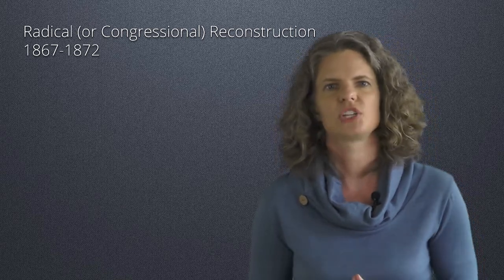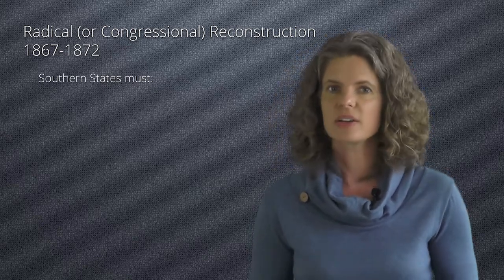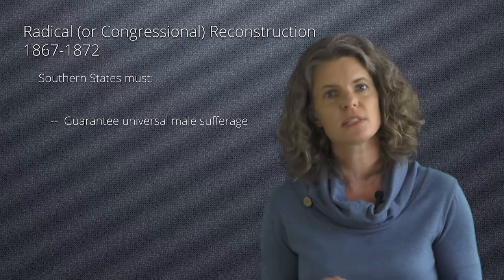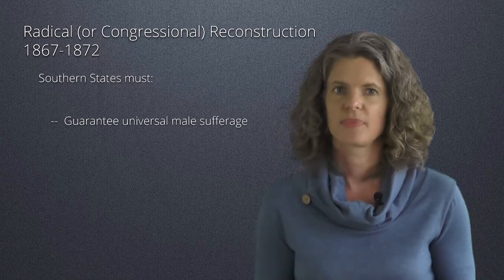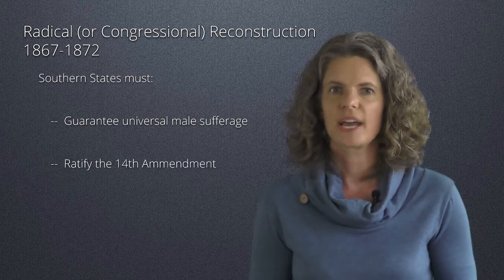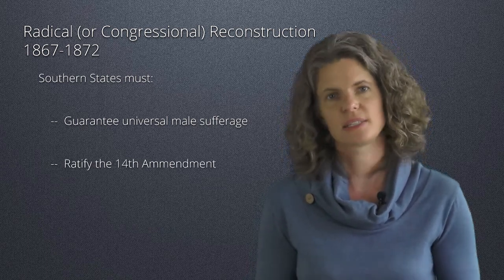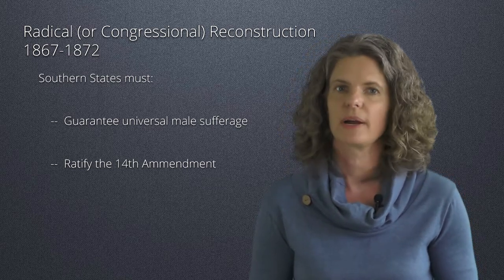This was the period known as radical reconstruction, and it lasted from 1867 to 1872. Among the conditions that Congress set for southern states to establish their own governments were the guarantee of universal male suffrage or voting rights without regard to race, and the ratification of the 14th amendment, which guaranteed birthright citizenship and equal protection of the law for all Americans.